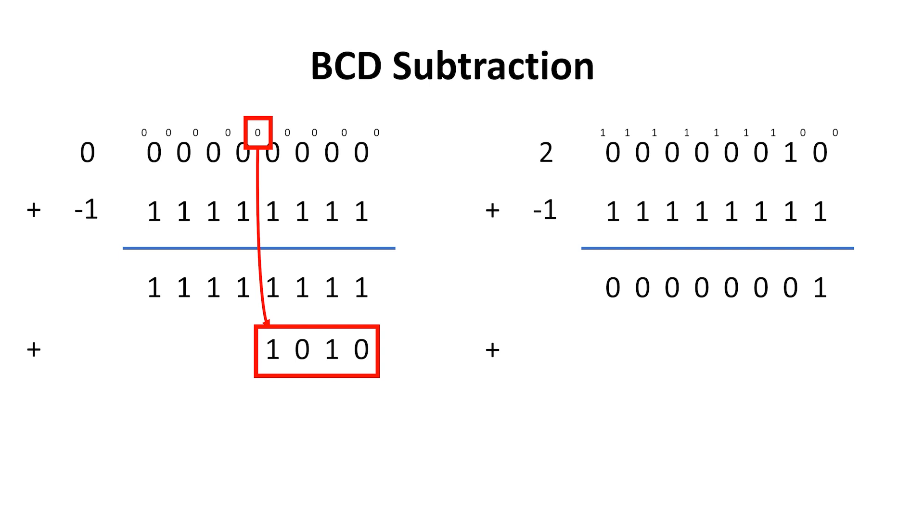If half carry is clear, that means we've wrapped around this digit and the result will be in the range of 6 to 15. Therefore, we need to subtract 6 to bring it back to the range of 0 to 9, which is what we want. One way to subtract 6 is actually to add A, but to ignore the carry out from the decimal adjust addition. In the second case on the right, where half carry is set, we don't actually want to do anything because the number is already in the correct range for binary coded decimal.